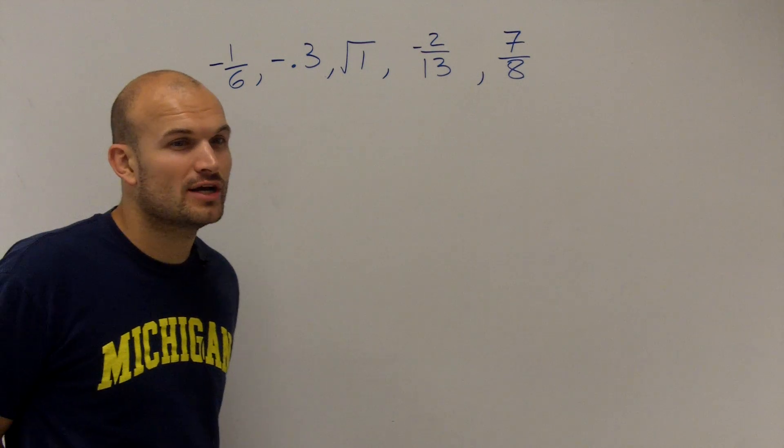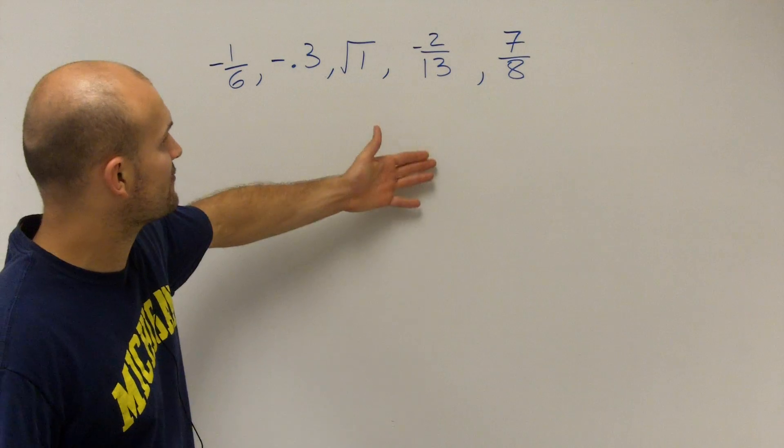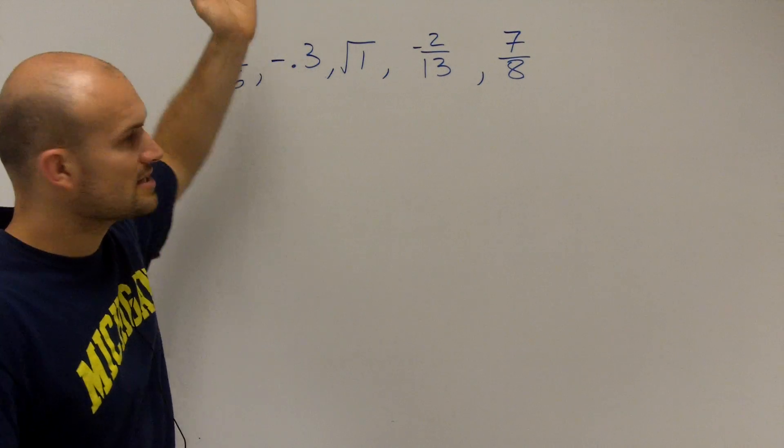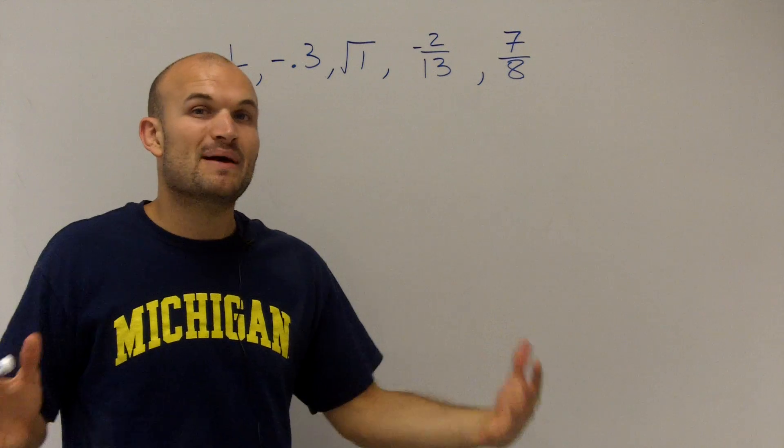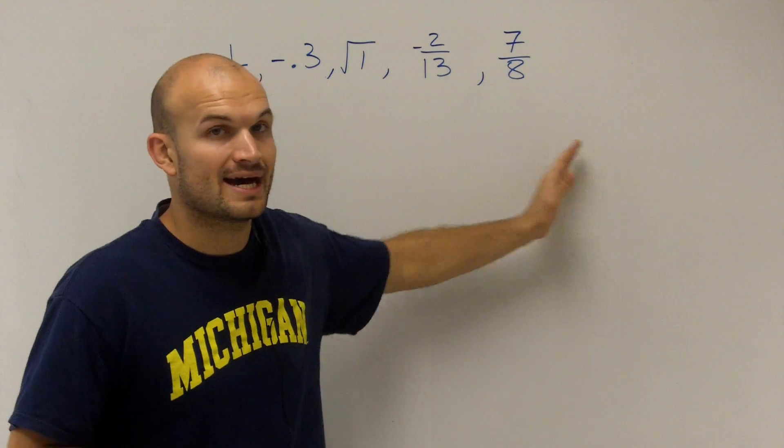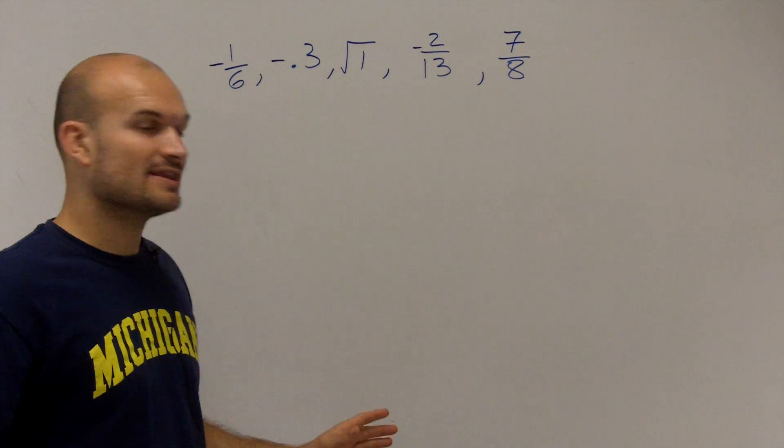So it's really hard for us to be able to classify them when they're all in different forms. I have some as a fraction, some represented as a radical, and then some just as pure decimals. So the best and easiest way to organize and be able to list from least to greatest is to convert everything to a decimal.